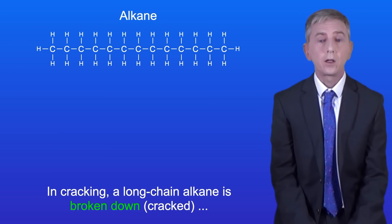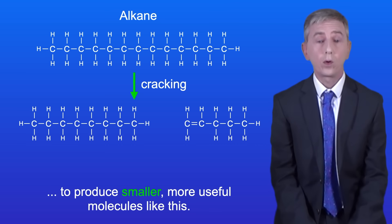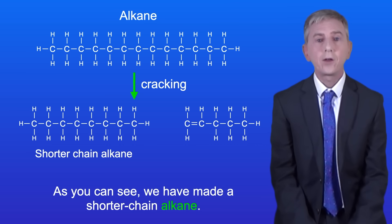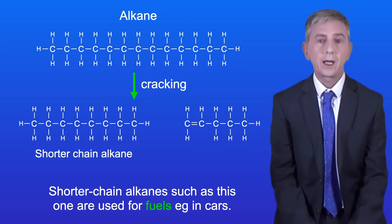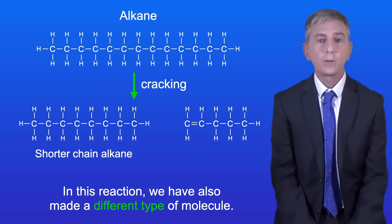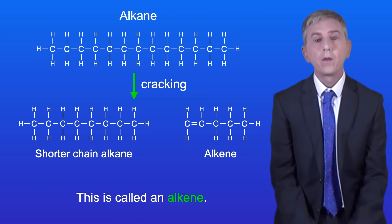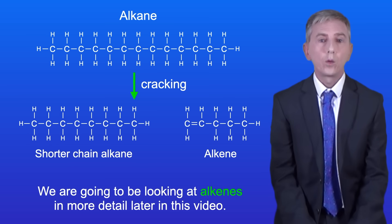In cracking a long chain alkane is broken down or cracked to produce smaller more useful molecules like this. As you can see we've made a shorter chain alkane. Shorter chain alkanes such as this one are used for fuels for example in cars. Now in this reaction we've also made a different type of molecule. This is called an alkene. We're going to be looking at alkenes in more detail later in this video.